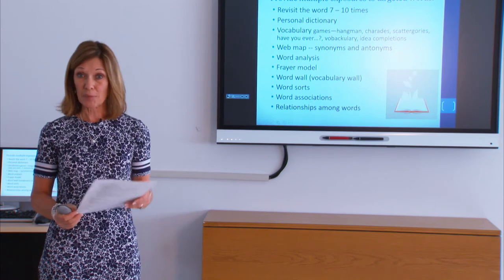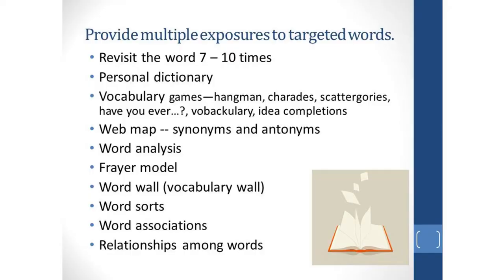Make a web map of synonyms and antonyms, and break the word down into parts to come up with related words — for example, 'responsible' leads to 'response' and other related words. The Frayer model has students write the word in the middle, then provide a definition, an example, and a non-example — particularly beneficial for students in groups, especially coming up with non-examples like 'irresponsible.' Instead of a word wall, have a vocabulary wall. Have word sorts, word associations, and talk about relationships among words.